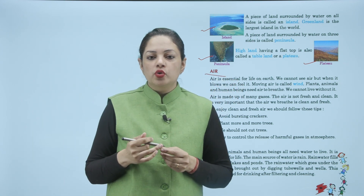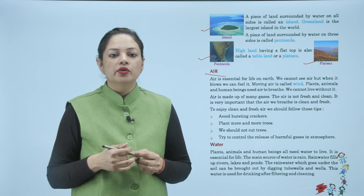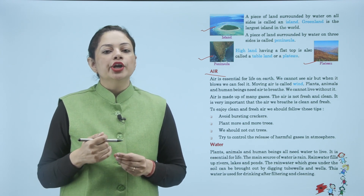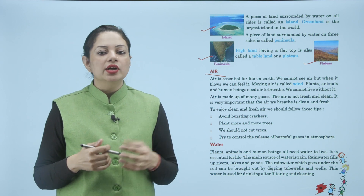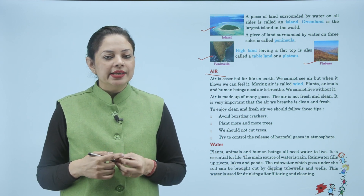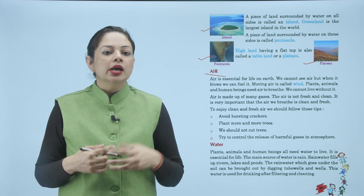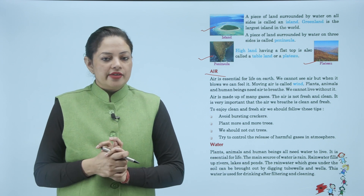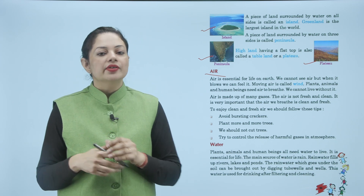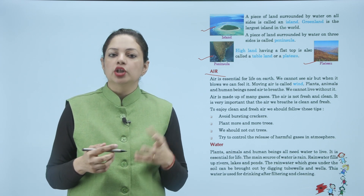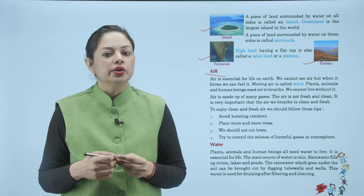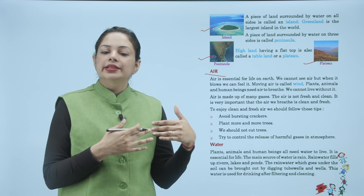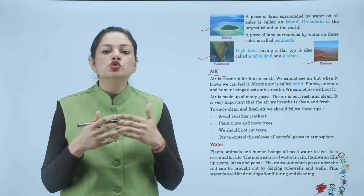Air is essential for life on earth. We cannot see air but when it blows we can feel it. Moving air is called wind. Plants, animals and human beings need air to breathe — we cannot live without it. Air को हम देख नहीं सकते पर feel कर सकते हैं, जैसे जब हवा चलती है वो दिखाई नहीं देती पर हम उसको feel कर सकते हैं।